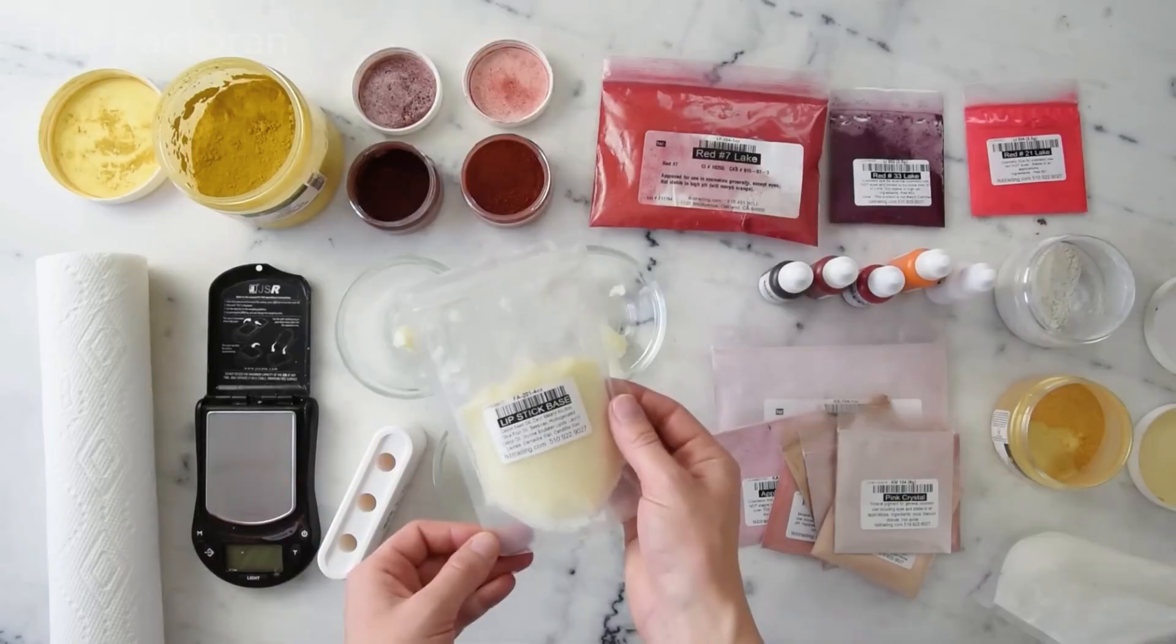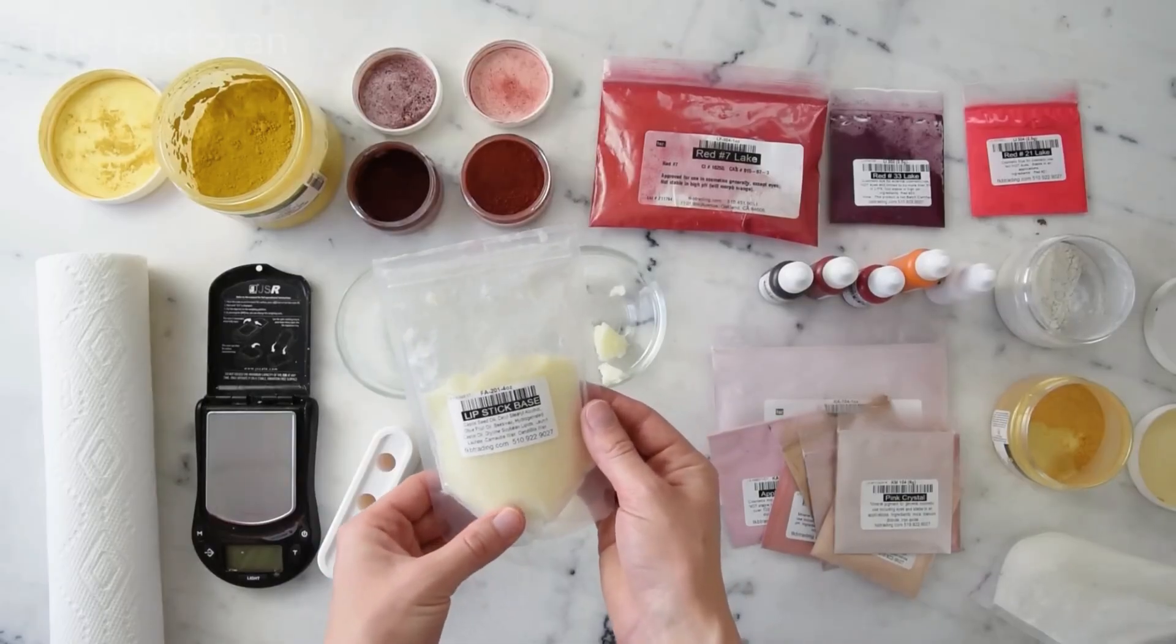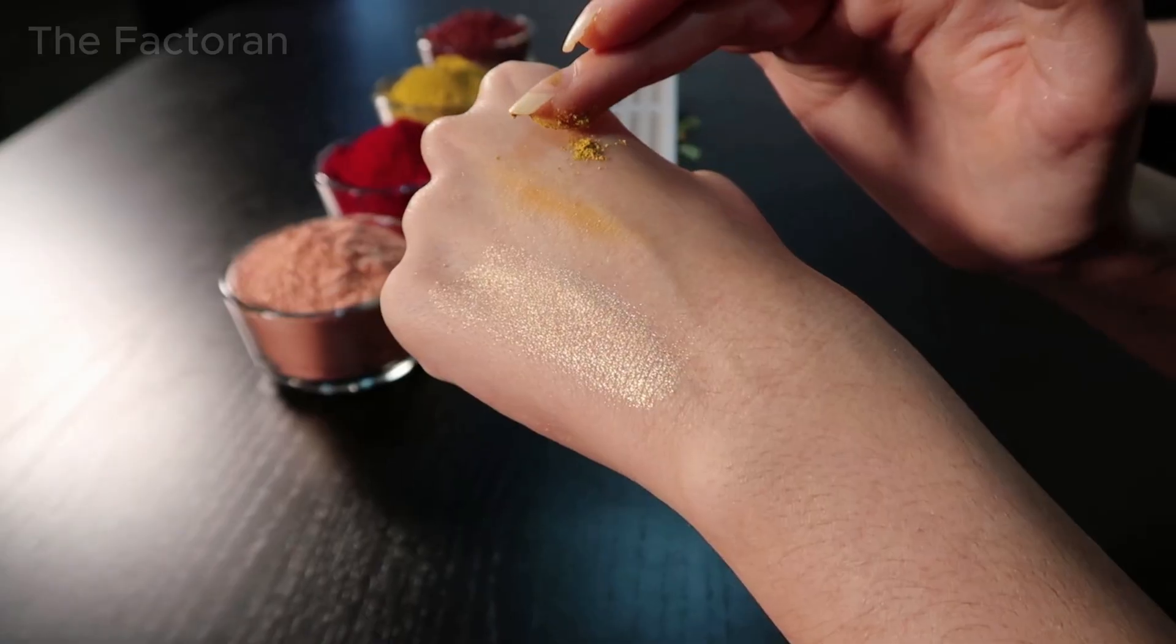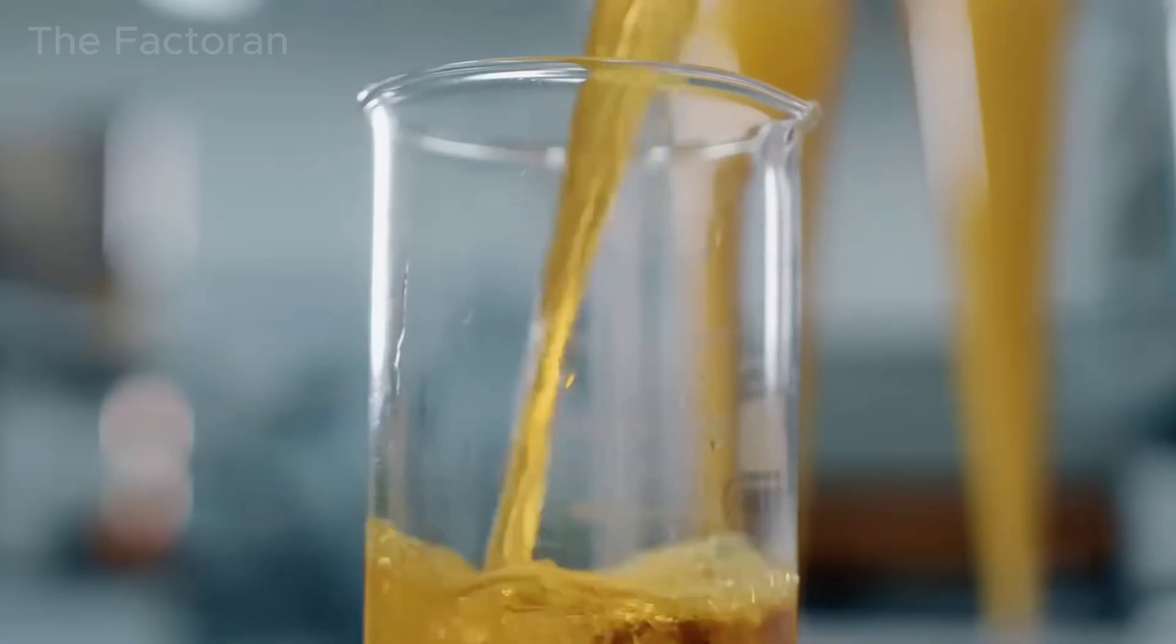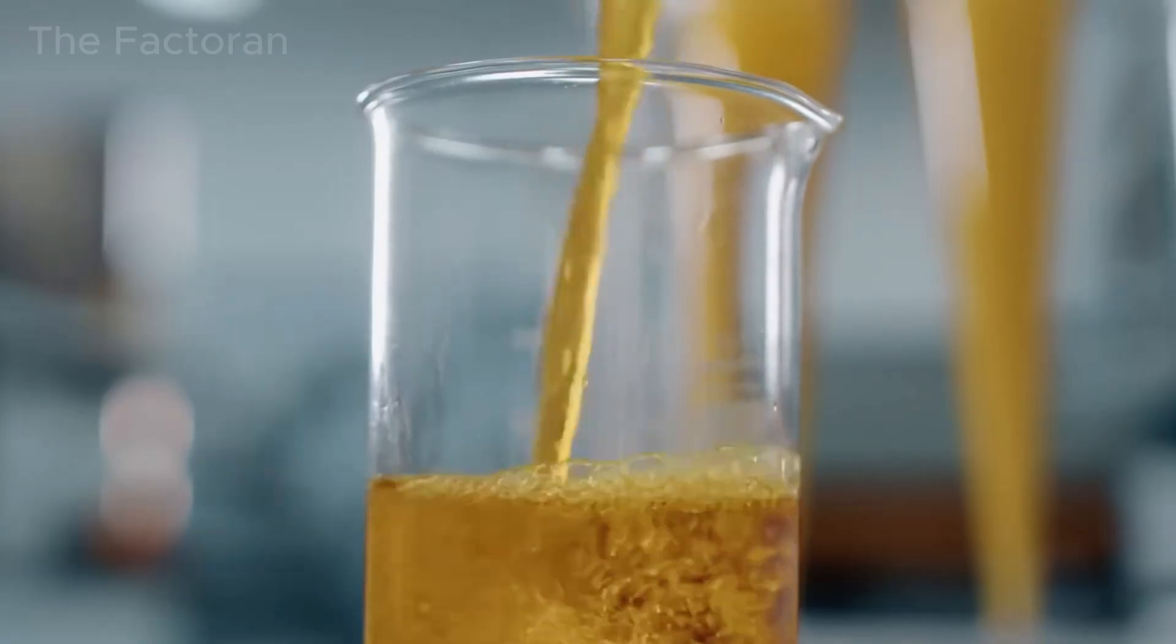At its core, lipstick is composed of three main groups of ingredients: waxes, color pigments, and conditioning emollients. Each group plays a distinct role in the final structure of the lipstick.